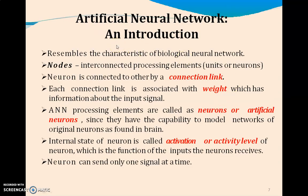Artificial neural networks are designed to resemble the characteristics of biological neurons. Instead of soma, we call them nodes. Nodes are interconnected processing elements. Neurons are connected to other neurons by connection links, instead of synapses and dendrites. Each connection link is associated with a weight value that carries information about the input signal. ANN processing elements are called neurons or artificial neurons since they can model the networks of original neurons as found in the brain. The internal state of the neuron is called activation or activity level. When the summation of the input multiplied with the weight is greater than the threshold value, that output neuron will be triggered. The neuron can send only one signal at a time.